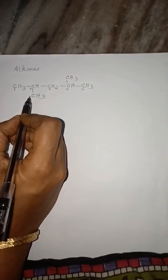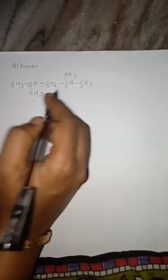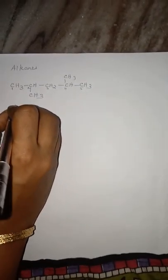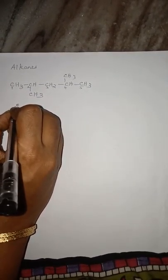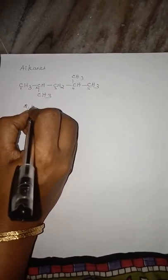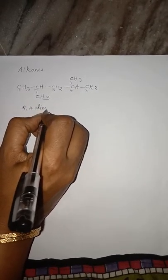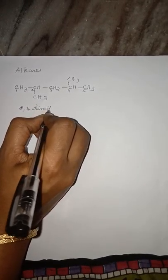Now, in the longest chain, assign and number the substituents. The substituent is a methyl group present in the second place and in the fourth place. Therefore, we have to name this as 2,4-dimethylpentane.